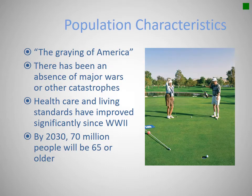Why is the geriatric population growing so fast? By 2030 there will be 70 million people over the age of 65 in America, because the baby boomers are starting to retire. The baby boomers were those born between 1950 and 1970, one of the largest generations in American history. That generation is living longer, mainly because of an absence of major catastrophes or wars, and because healthcare standards have significantly improved.